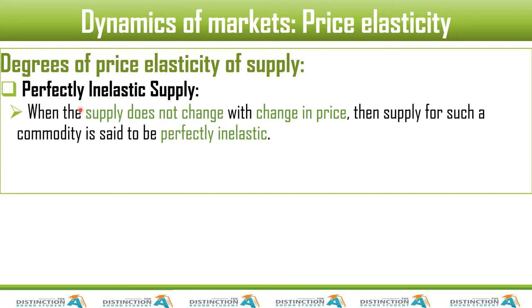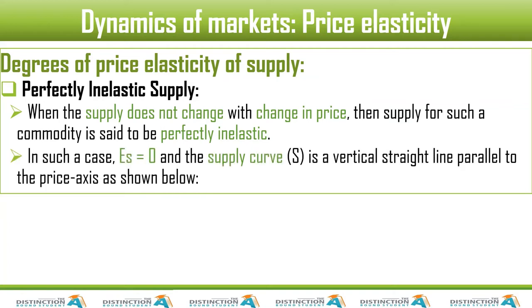The next degree is perfectly inelastic supply. I started with the two extreme cases — perfectly elastic and perfectly inelastic. When the supply does not change with a change in price, the supply for such a commodity is said to be perfectly inelastic, because it does not respond — just like demand. So in this extreme case, PES is equal to zero.